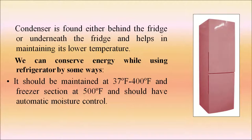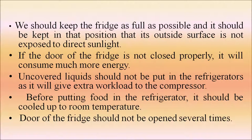First, let's talk about the refrigerator. The condenser, found behind or underneath the fridge, helps maintain its lower temperature. We can conserve energy by maintaining the fridge at 37–40°F and the freezer section appropriately, with automatic moisture control. Keep the fridge as full as possible and away from direct sunlight. If the door is not closed properly, it will consume much more energy. Do not put uncovered liquids inside — this gives extra workload to the compressor. Cool food to room temperature before putting it in, and avoid opening the door several times.